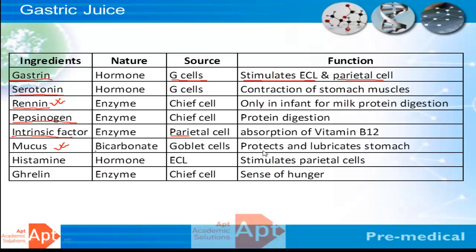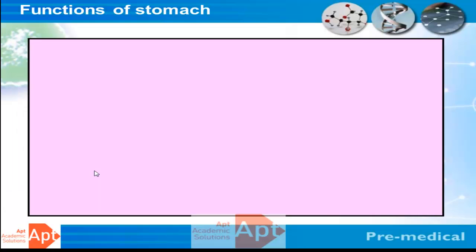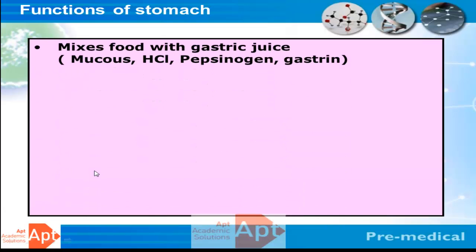Mucus, primarily made up of bicarbonate, is secreted by goblet cells and its prime role is to protect and lubricate the stomach. Histamine stimulates the parietal cells for secretion of hydrochloric acid. Ghrelin is secreted when we feel hungry; it sends a message to the brain, which releases acetylcholine as a neurotransmitter, exciting the parietal cells for hydrochloric acid secretion. These are the main gastric juices involved in the process of gastric digestion.